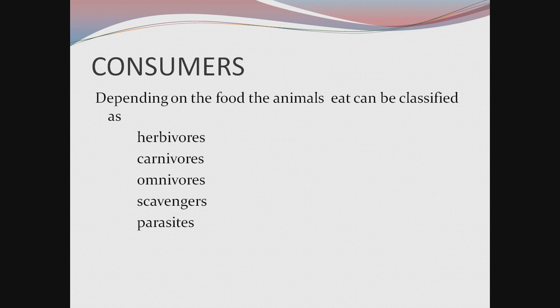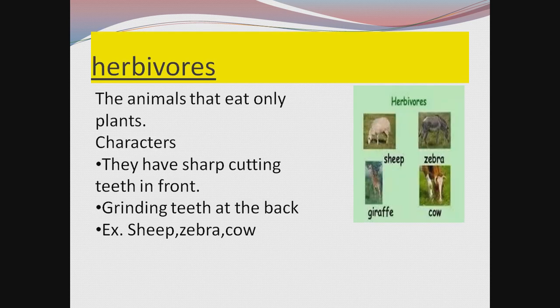Those who depend on plants for their food, or those who cannot prepare their own food, are called as consumers. Depending on the food the animals eat, they can be classified as follows: herbivores, carnivores, omnivores, scavengers, and parasites.